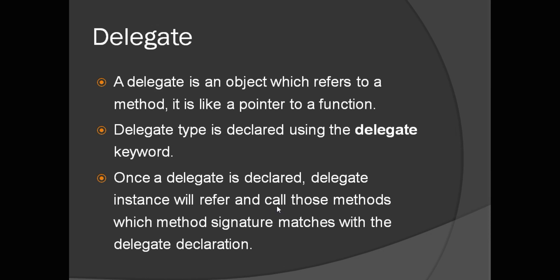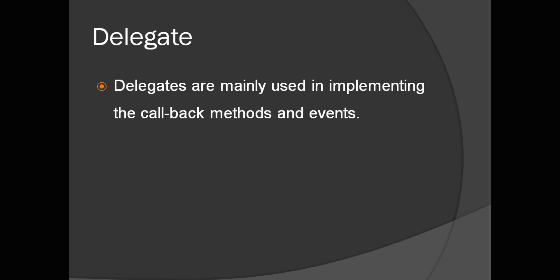It can call only those methods whose method signature matches the delegate declaration. For example, assume a delegate declaration returns an integer and accepts two integer arguments — it can point only to methods whose method signature also returns an integer and accepts integer arguments.